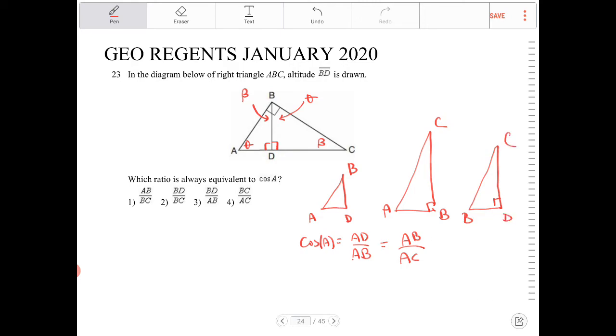Now, the thing is, all of these angles are going to be the same. This is theta, this is theta, and this is also theta. And then, so in other words, BD over BC.